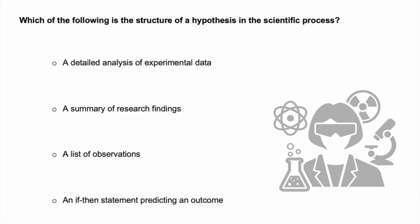Problem two. Which of the following is the structure of a hypothesis in the scientific process? Is it a detailed analysis of experimental data? A summary of research findings? A list of observations? Or an if-then statement predicting an outcome? Let me begin by pointing out that some of these distractors in the answers are referring to different steps in the scientific process. However, the question specifically asks us to identify the structure of a hypothesis.